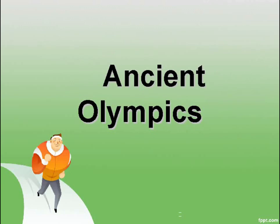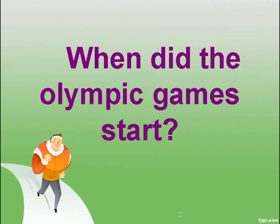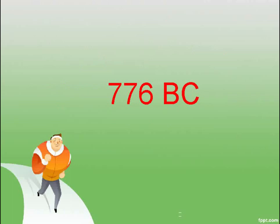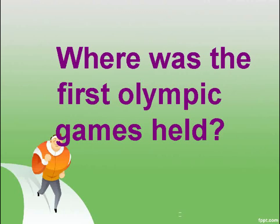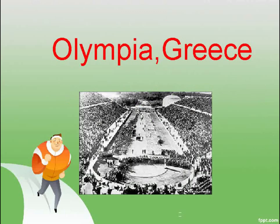Ancient Olympics. When did the Olympic Games start? 776 BC. Where was the first Olympic Games held? Olympia, Greece.